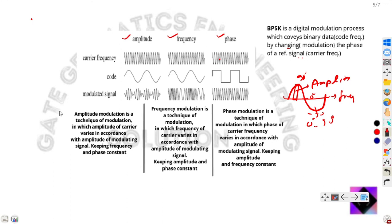Amplitude modulation is a technique in which the amplitude of the carrier varies in accordance with the amplitude of the modulating signal. That means the amplitude of the carrier frequency varies with the amplitude of the code. You can see the amplitude of the carrier and code frequency varying — that is the modulated signal by amplitude modulation.